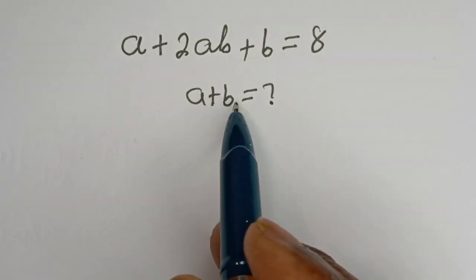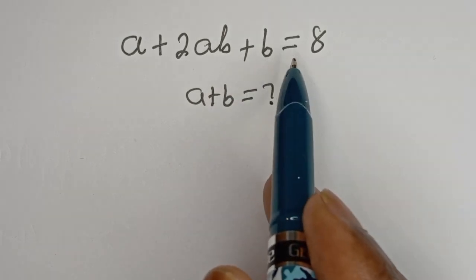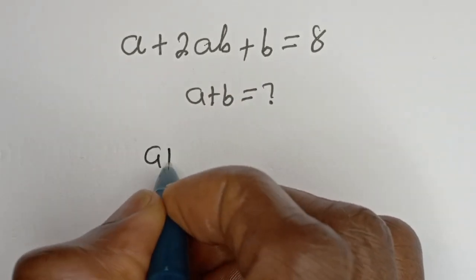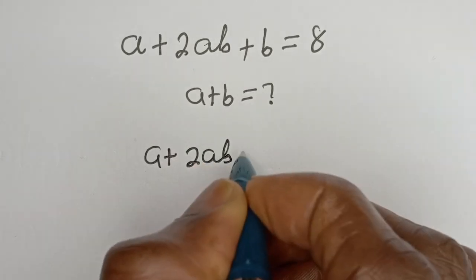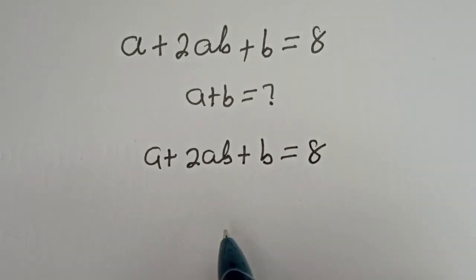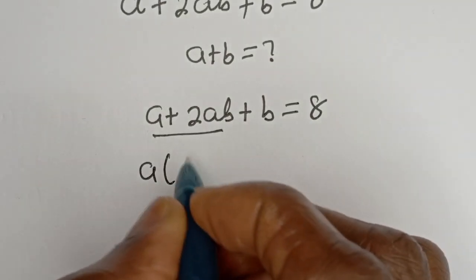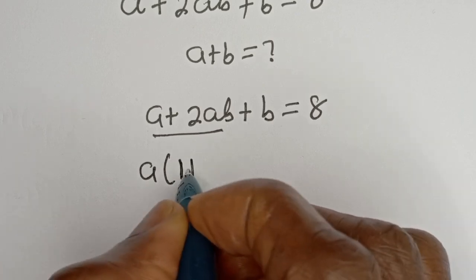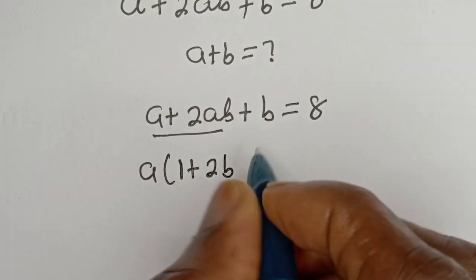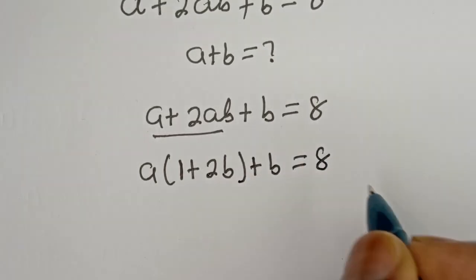How to solve for a plus b in this equation: a plus 2ab plus b is equal to 8. This can be written as a bracket 1 plus 2ab plus b is equal to 8.